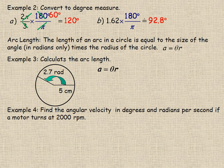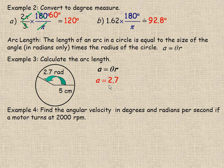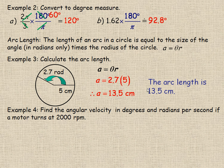The nice thing about measuring angles in radians is there's a very convenient formula for calculating arc length — how far around a circle you've traveled. The formula says the arc length (lowercase a) equals the size of the angle in radians multiplied by the radius of the circle. In this example, we have a 2.7 radian angle with a radius of 5 centimeters. Plugging in: 2.7 times 5 equals 13.5 centimeters. So the arc length is 13.5 centimeters.